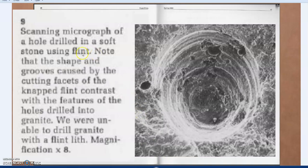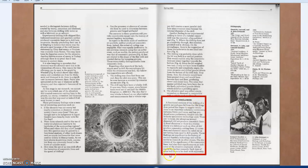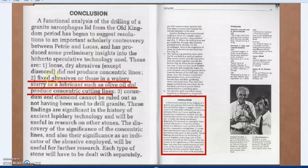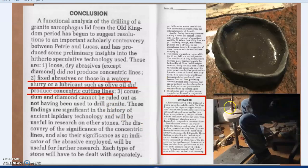This image, viewed under a microscope, shows drilling with a soft stone using flint and the shape of the grooves. The paper's conclusion states that fixed abrasives, or those in a watery slurry or lubricant such as olive oil, did produce concentric cutting lines. Concentric is directly related to the helix — those lines are concentric but angled — and I'll show with multiple examples how it appears that a helix or spiral is there, but that isn't really the case. That explanation is coming with the upcoming release.